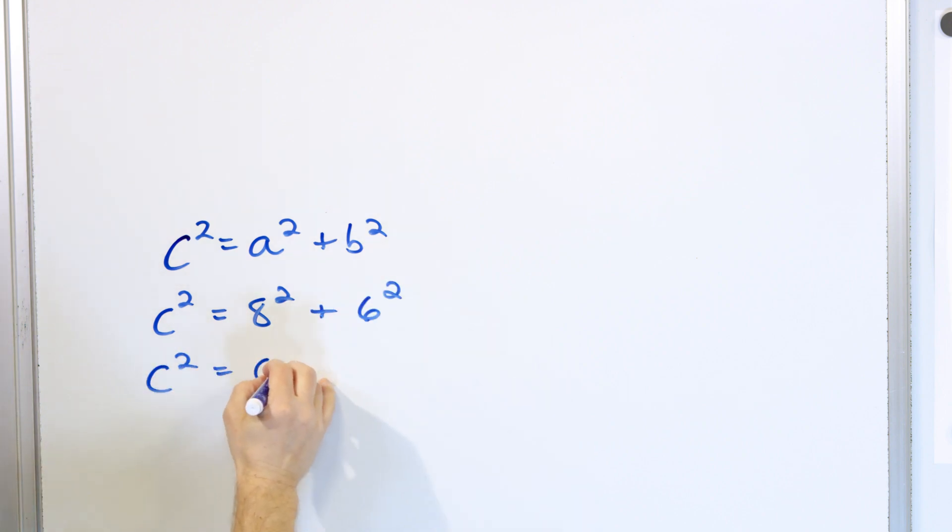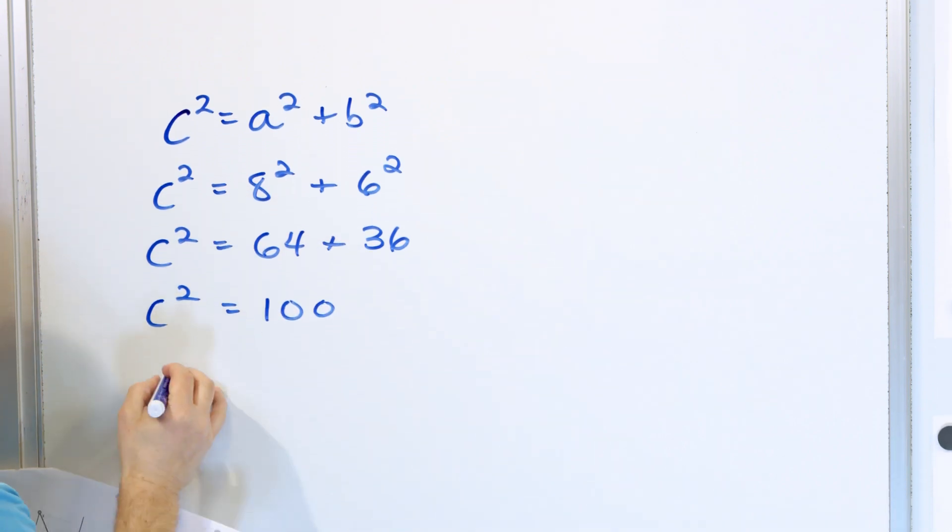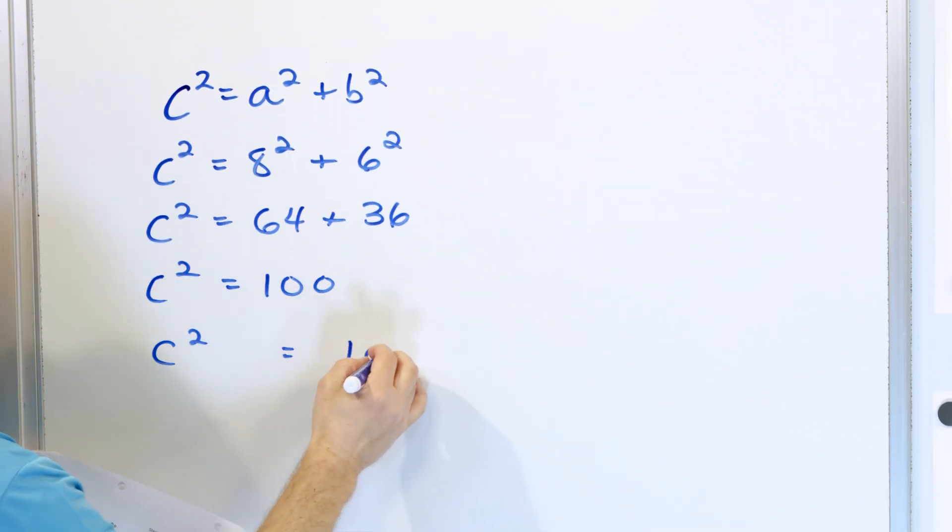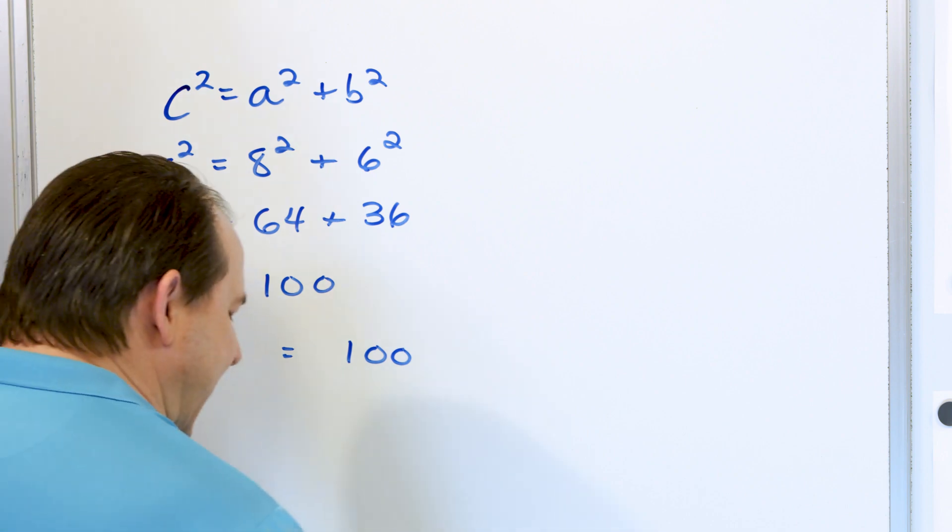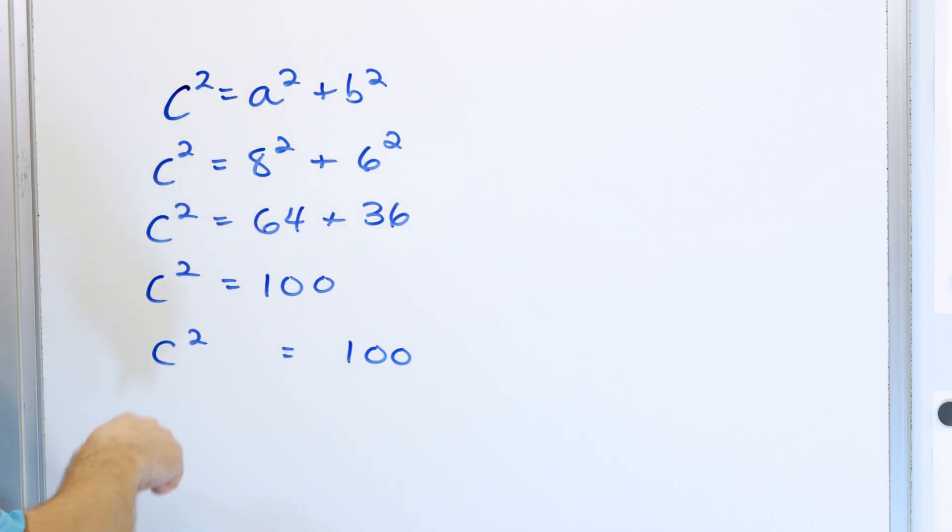And so eight times eight is 64 and six times six is 36. When we add these numbers together, we get a nice even number of 100. So C² is 100. So how do we get rid of this square term right here? We take the square root of both sides.